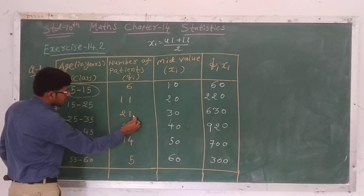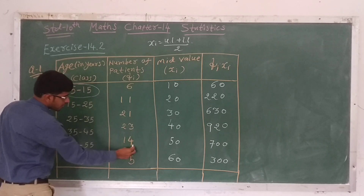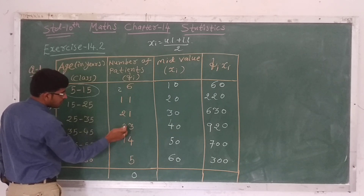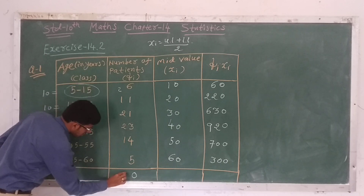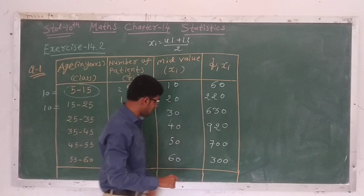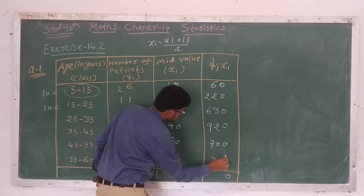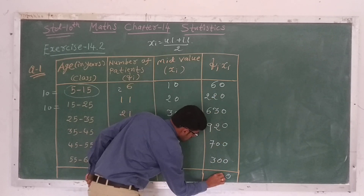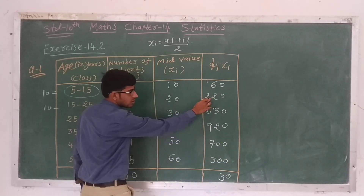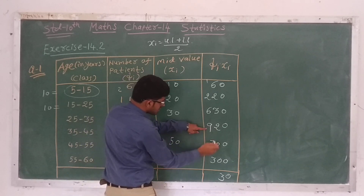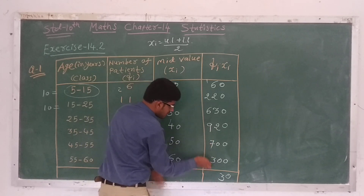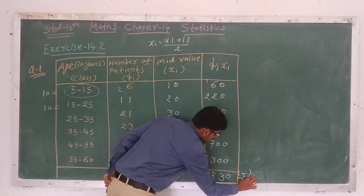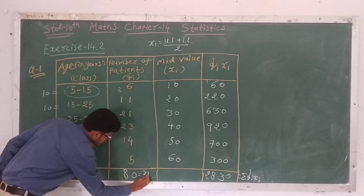Adding the frequencies: 6 plus 1 is 7, plus 1 is 8, plus 3 is 11, plus 4 is 15, plus 5 is 20, giving sigma fi equal to 80, which equals N. Then computing sigma fi·xi by adding all fi·xi values gives sigma fi·xi equal to 2830.